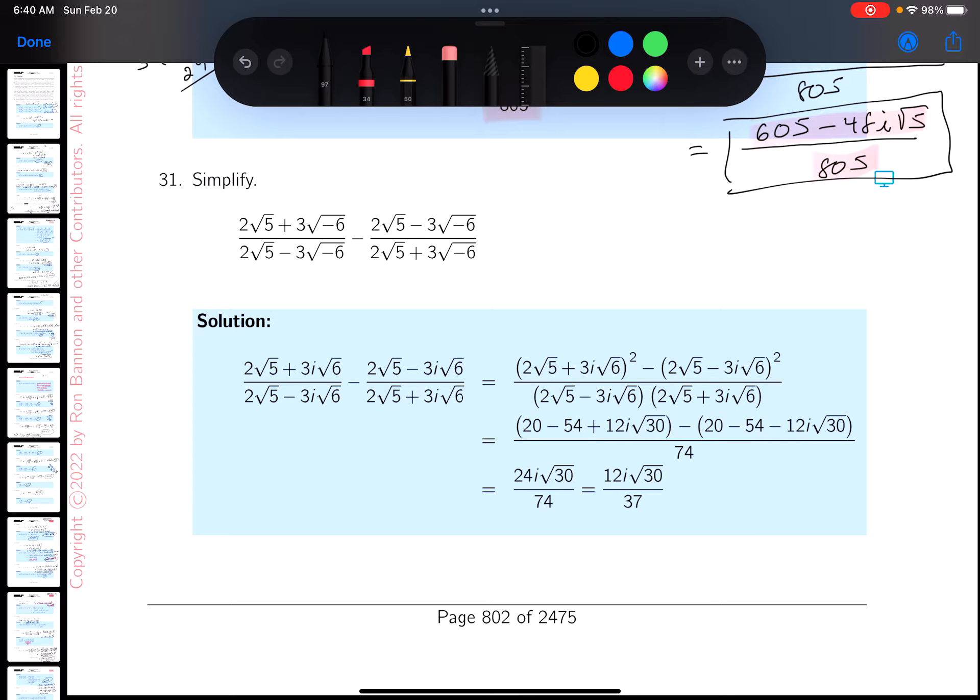Again, I strongly suggest that this gets written immediately with the i in it. So 2 root 5 plus 3i root 6 over 2 root 5 minus 3i root 6.